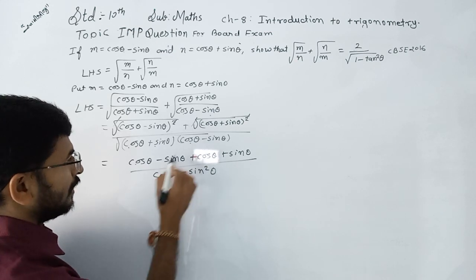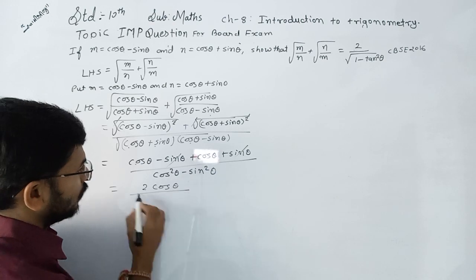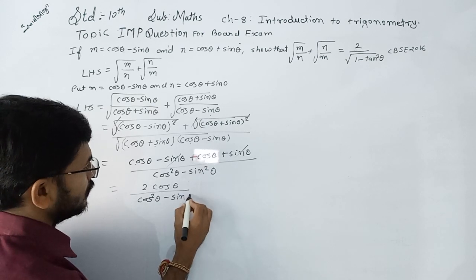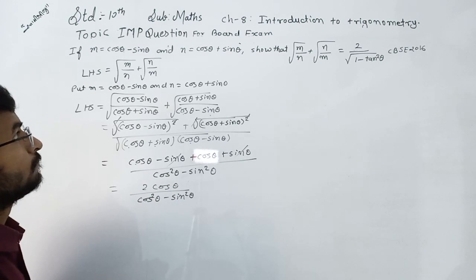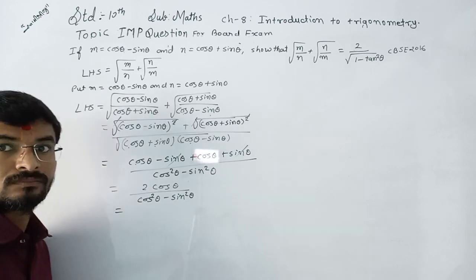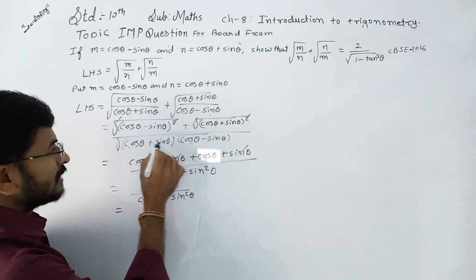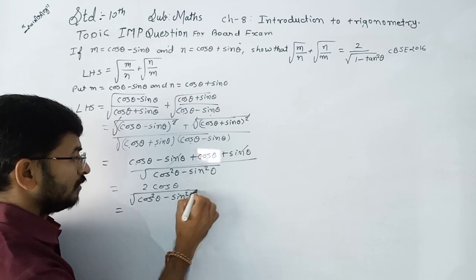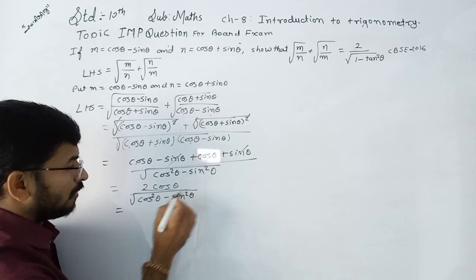In the numerator, cos theta plus cos theta gives 2 cos theta, and the sin theta terms cancel out, leaving 2 cos theta. The denominator is the square root of cos square theta minus sin square theta. Note that the square root applies to the entire denominator expression.